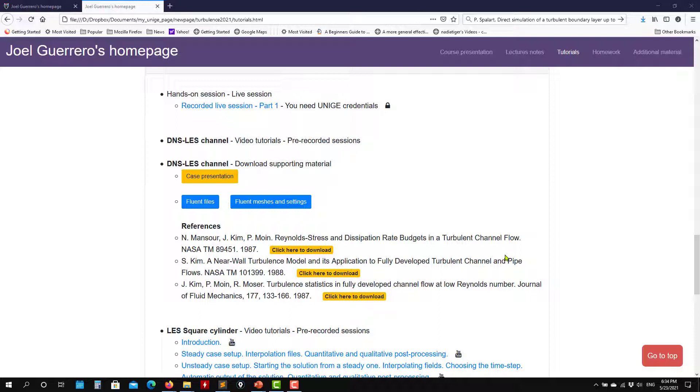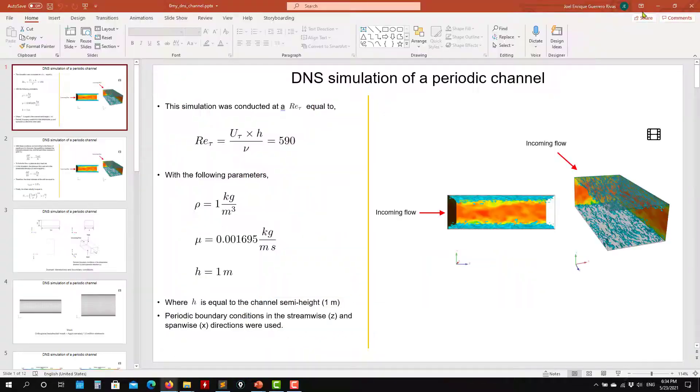This is a classical validation case. Do not be afraid about the word DNS. We're going to use a coarse mesh, and actually these references here are very old, but probably using a similar mesh that we're doing. So this is about computing statistics. Let me introduce the case to you. Here you have all the information to run the cases.